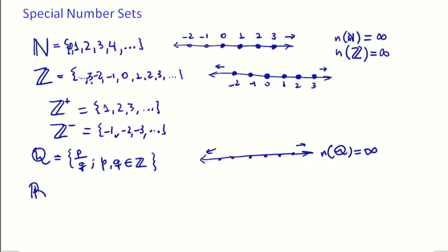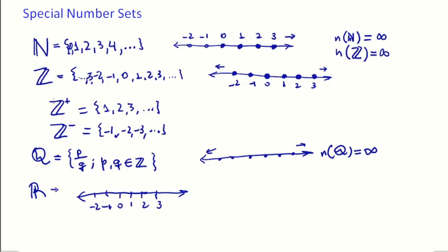Our final set is the real numbers. The real numbers are basically all numbers that can be placed on the number line — so it's the whole number line going both ways: one, two, three, zero, negative one. Everything except things like roots of negative numbers — which we'll see in the future — is going to be a real number. So the special number sets are: natural numbers, integer numbers, rational numbers, and real numbers.